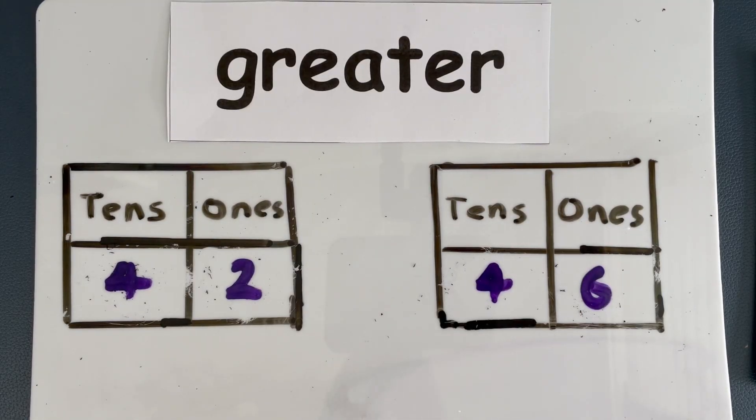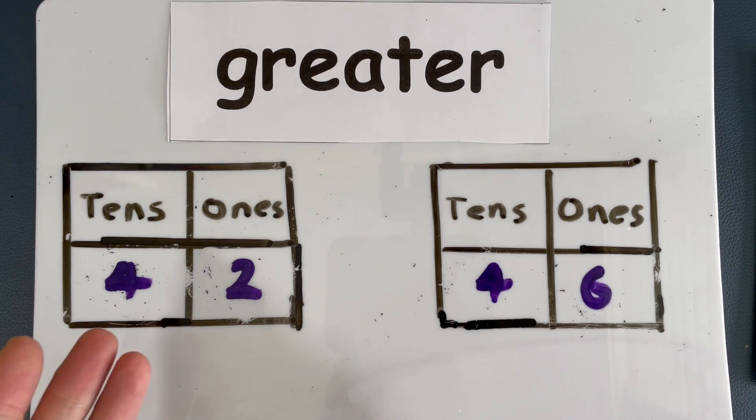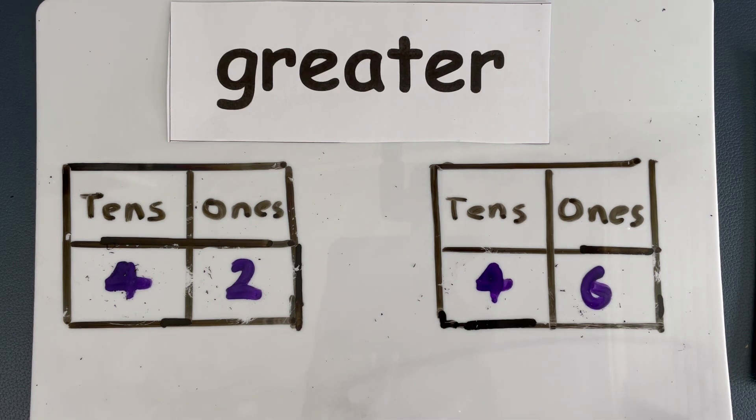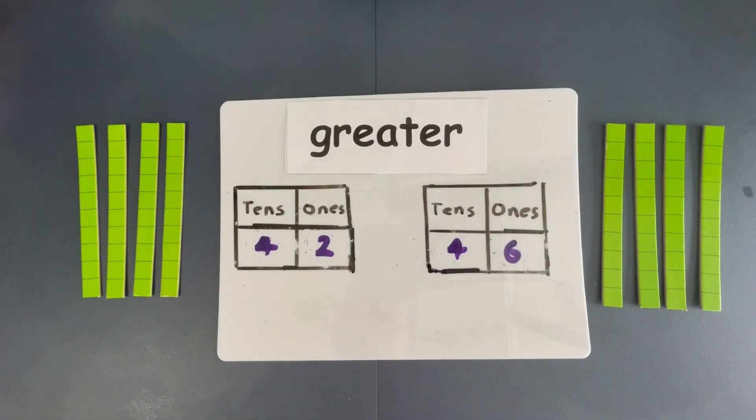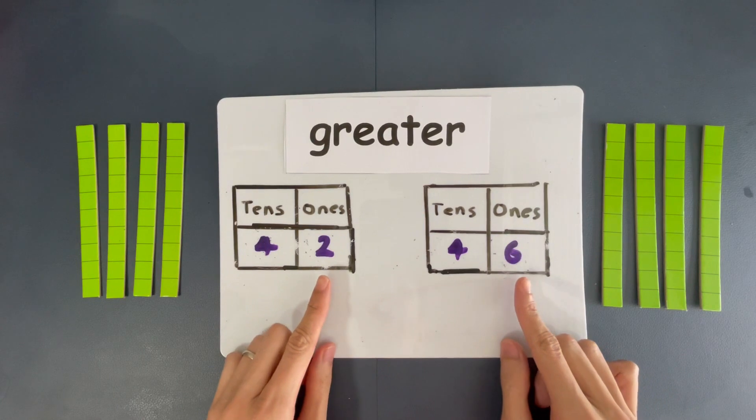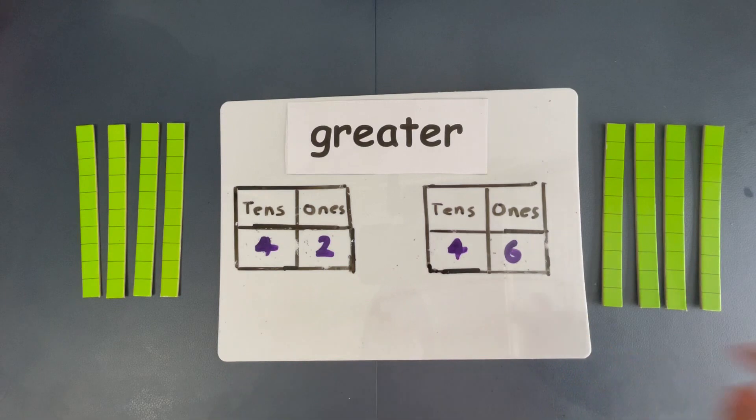Now, some of you might ask me, what if both of the numbers have the same number of tens? For example, 42 and 46. Both of these numbers have the same number of tens, right? 4 tens, 4 tens. Just like that. 4 tens, 4 tens. So, how am I going to tell which one is greater? Now, when both tens are the same, we look at the ones. Yes, over here. Okay? We are going to look at the ones now and see which ones is greater. Okay?